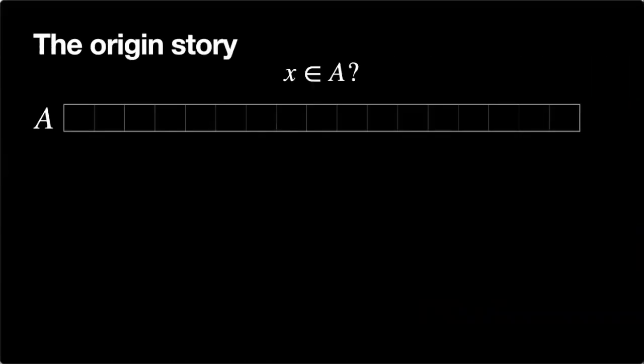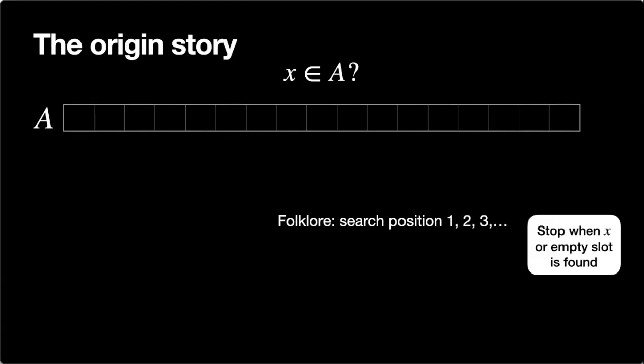The basic problem we're considering is storing a set, and the type of queries we're interested in is membership — does x belong to the set A that is stored? We're going to use an array for storing A. The most basic thing you can do is store elements in arbitrary order and search linearly through positions one, two, three, and so on. If you find x you stop, and if you find an empty slot, the invariant says x is not present in the table.